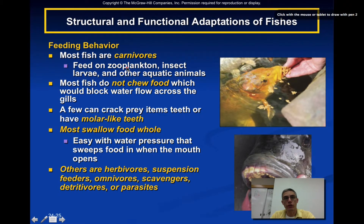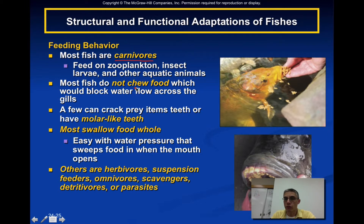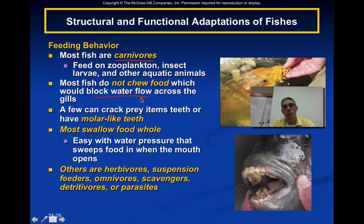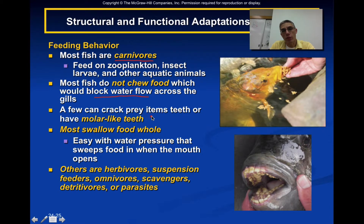Because we have such an enormous variety of fish, this lends itself to quite a few different types of feeding behaviors. Most fish are still considered carnivores, feeding on zooplankton, insect larvae, and various other aquatic animals. However, most fish are not going to chew their food, because breaking up food into lots of small bits could block or interfere with water flow across the gills and upset their ability to respire. Some can crack prey open with very specialized molar-like teeth, as shown at the bottom — a fish with teeth adapted to cracking open hard items like nuts. But most simply swallow their food whole.